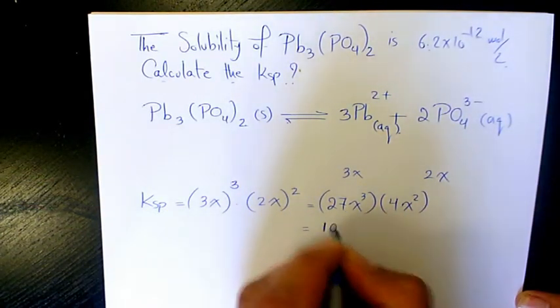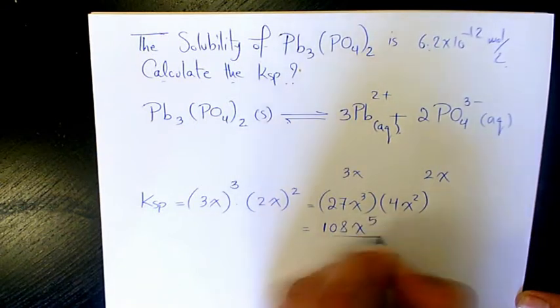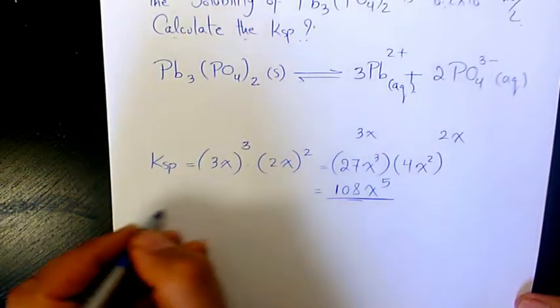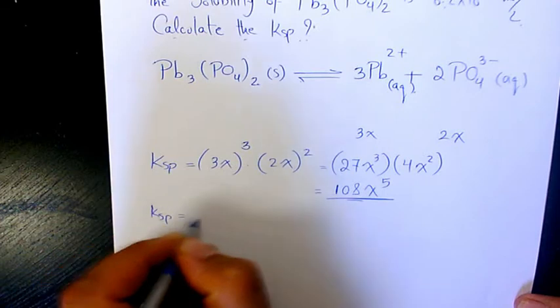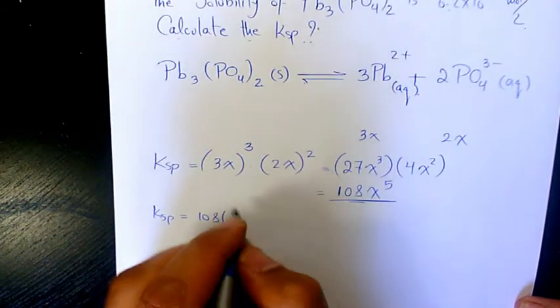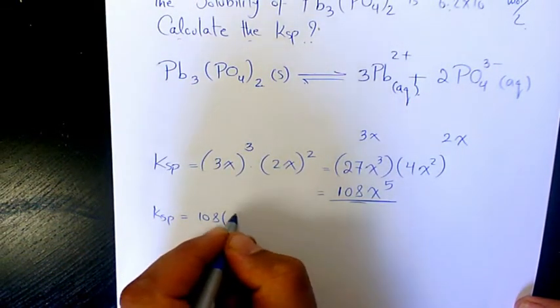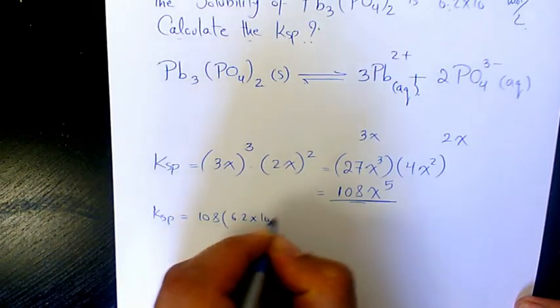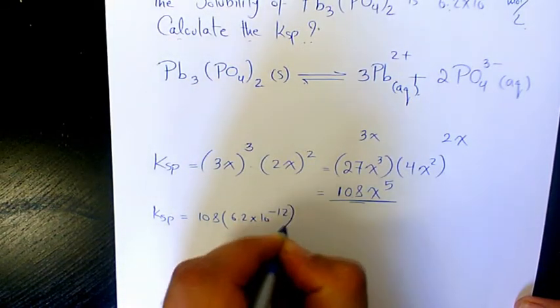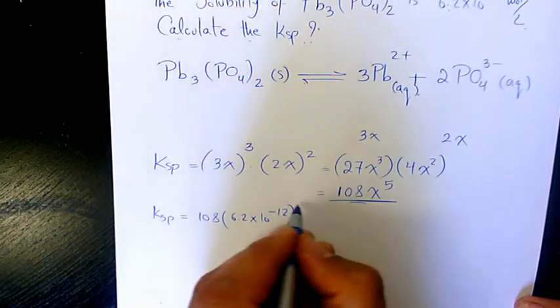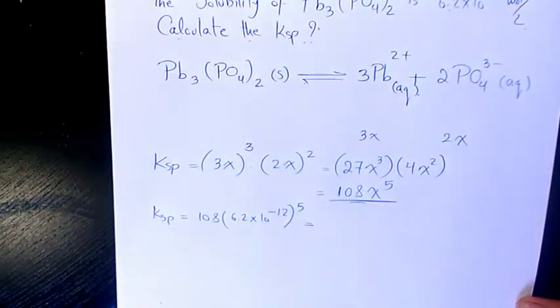which equals 108x^5. So Ksp will be 108 times x, which is 6.2 × 10^-12, to the power of 5. When you calculate it,